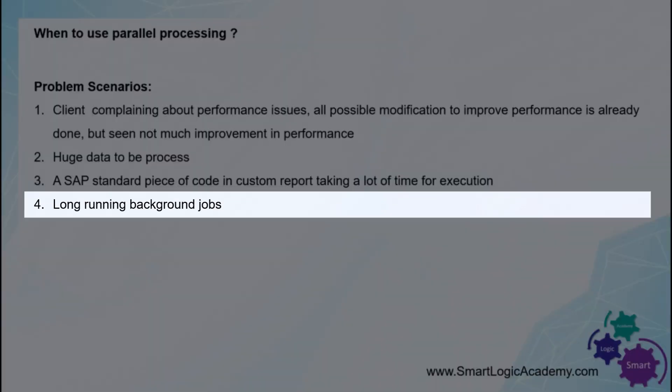Scenario 4: There is a report running in a background job processing millions of records and taking one or two days to complete. For example, if the report is fetching data from multiple database tables in a loop, doing very complex operations, and updating data in a database for millions of records — in such circumstances a report can take one or two days as well.